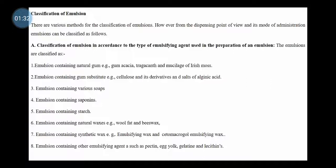The emulsions are classified as follows. First, emulsions containing natural gum — that is natural gum (akisha), which is obtained naturally from plants. The examples of natural gums are gum acacia, tragacanth, and mucilage of Irish moss. These are the natural emulsifying agents obtained from plants.